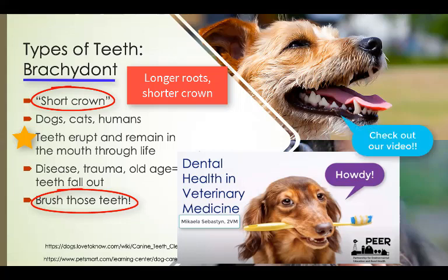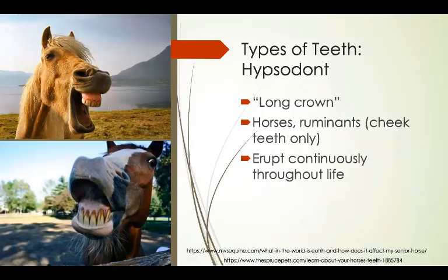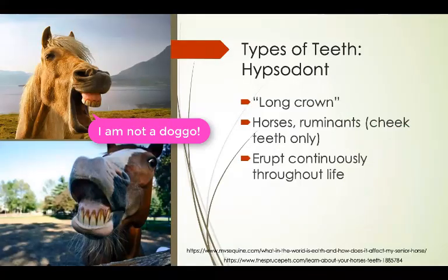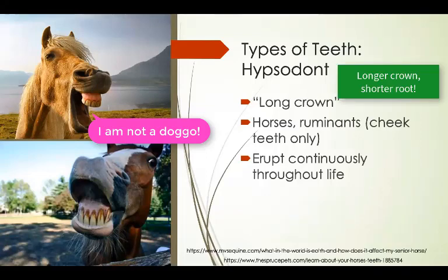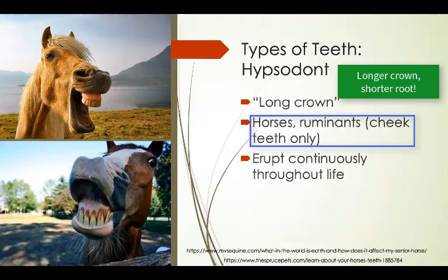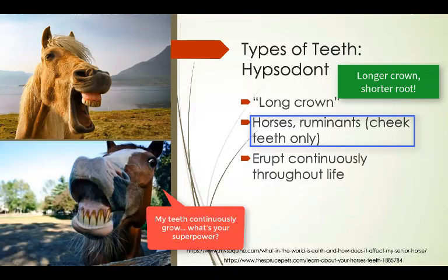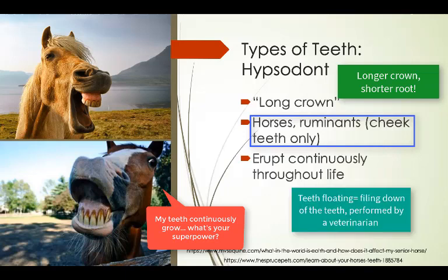For more info, see our video on dental health in veterinary medicine. Hypsodont teeth are a little different than brachydont teeth in that they have longer crowns and shorter roots. This type of tooth is found in horses and ruminants. Unlike brachydont teeth, they continuously erupt throughout life, so they need to be floated or filed down by a veterinarian at least annually.